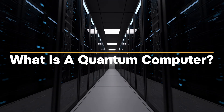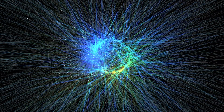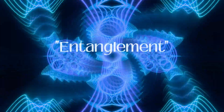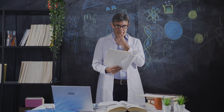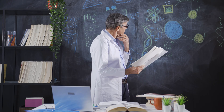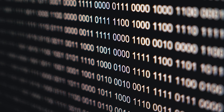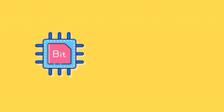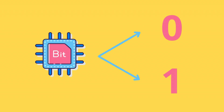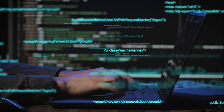A quantum computer is a computational machine that utilizes the laws of quantum mechanics — entanglement and superposition. From our school computer science courses, we know that modern computers operate in binary. The unit of information is a bit, which can have two values: zero or one. Logical operations with bits perform all computer magic.